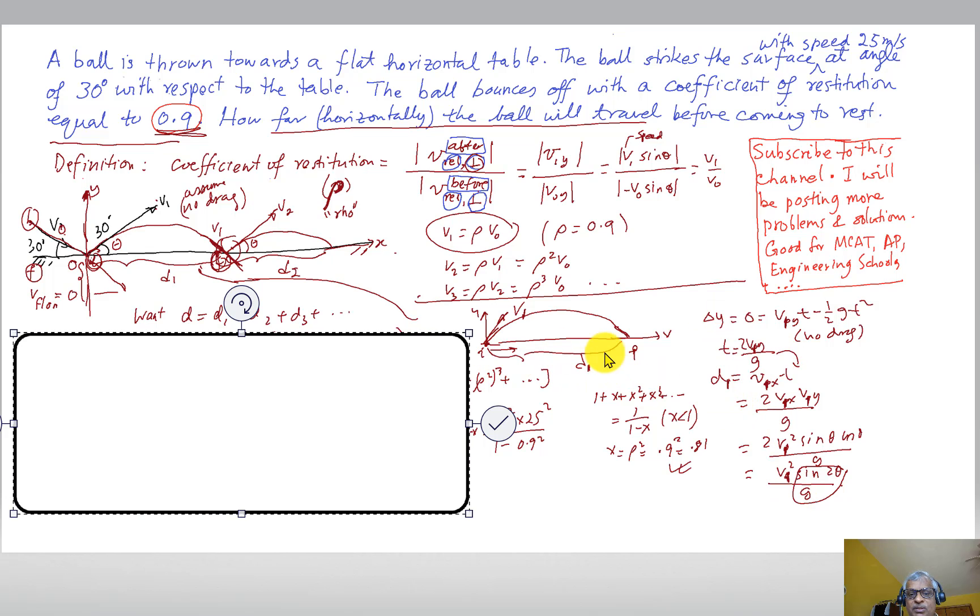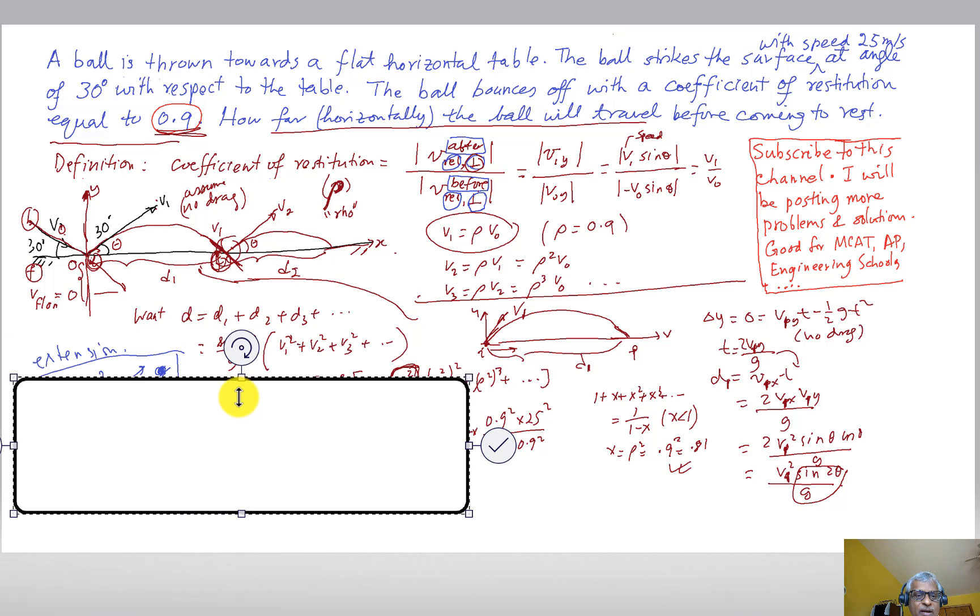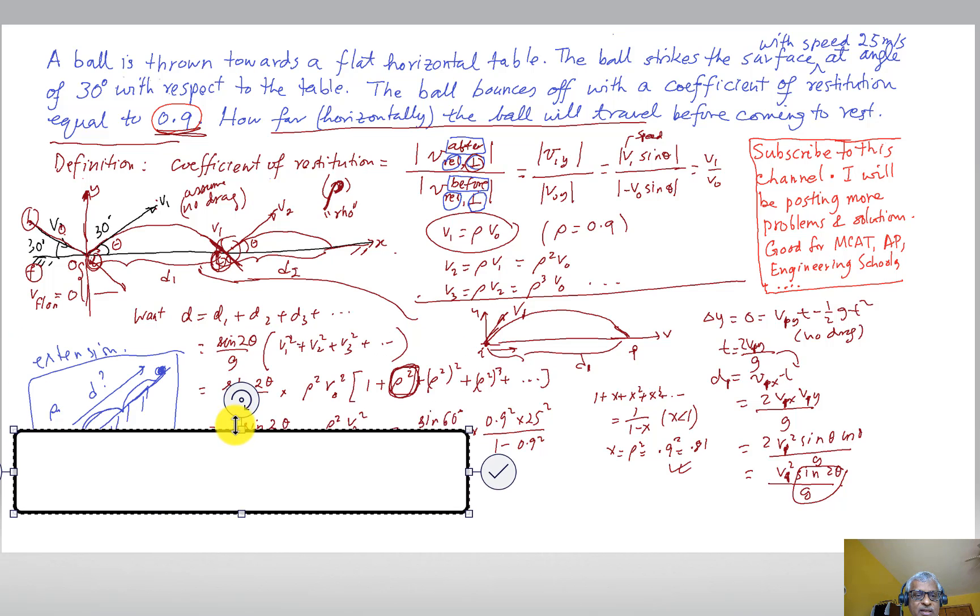It might take a couple of minutes but it's worth working it out. So now we know what d₁ looks like. In this formula, this is the only thing that depends on this bounce. Everything else is the same for all other bounces because this angle is going to be the same in every bounce. So we got the formula for all d's in terms of their v's, and I'm going to go back to my d's and try to plug that in.